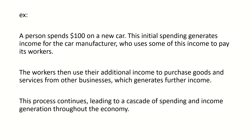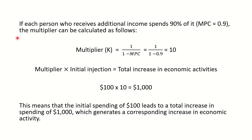This process continues, leading to a cascade of spending and income generation throughout the economy. If the person who receives additional income spends 90% of it, that means the marginal propensity to consume (MPC) is 0.9. The multiplier can be calculated as follows: K equals 1 over (1 minus MPC). In this case, 1 over (1 minus 0.9). Remember that MPC is a decimal number between 0 and 1, so the percentage has to be converted into a decimal by dividing by 100 — giving 0.9. So the multiplier will be 10 in this case.